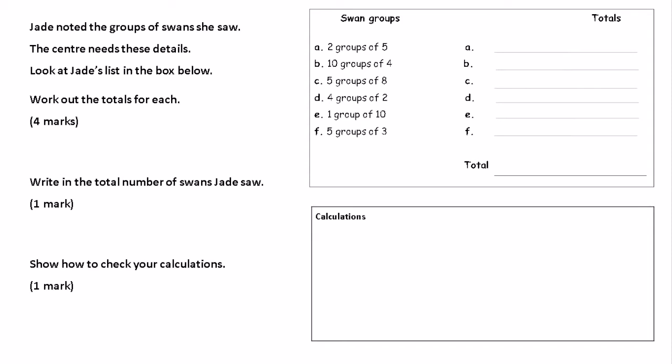Now, A, B, C, D, E and F. What we have is 2 groups of 5, 10 groups of 4, 5 groups of 8, 4 groups of 2, 1 group of 10, 5 groups of 3.